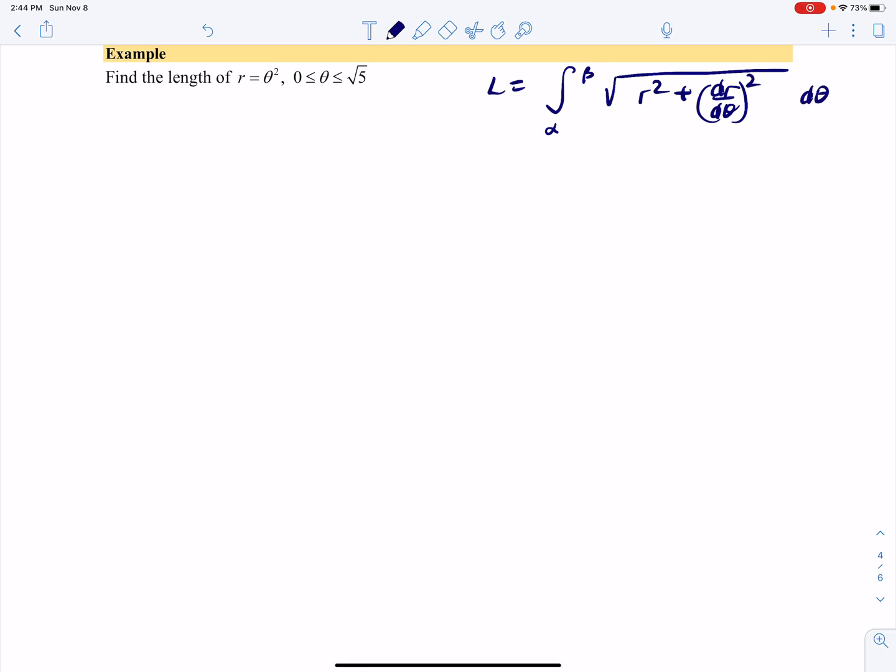Here we have a much more straightforward function, and we're given the limits of integration. So you're probably thinking, what could go wrong? We have the integral from zero to the square root of five.